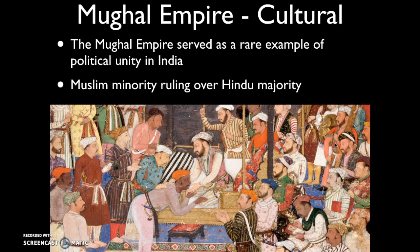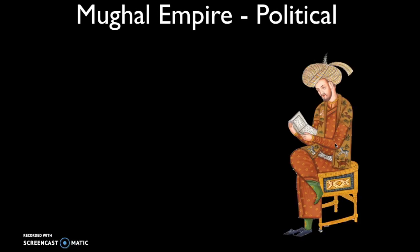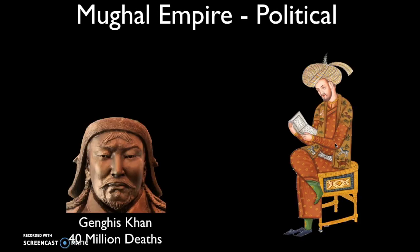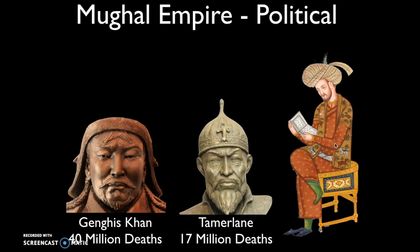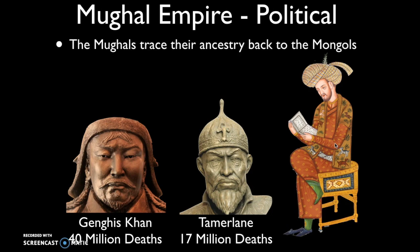Whether Muslim minority rule would lead to problems depended on how much tolerance the Muslim minority showed toward the Hindu majority. The Mughals sound very similar to the Mongols — and there's a reason for that. The Mughals claimed descent from Genghis Khan by way of Tamerlane, a subsequent leader responsible for the deaths of many people. The Mughal Empire thus traced its ancestry to the Mongols and also some Turkic groups.